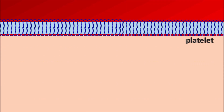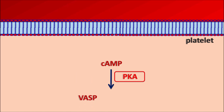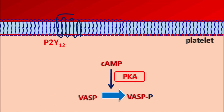Within the platelet, one important secondary messenger is cyclic AMP. Cyclic AMP stimulates protein kinase A, which converts VASP (vasodilator-stimulated phosphoprotein) into its phosphorylated form. Generally, VASP is required for platelet aggregation, but when it is phosphorylated, platelets are not aggregated. ADP acts on P2Y12 receptors, which are G-protein coupled receptors coupled with alpha, beta, and gamma subunits that are inhibitory in nature.